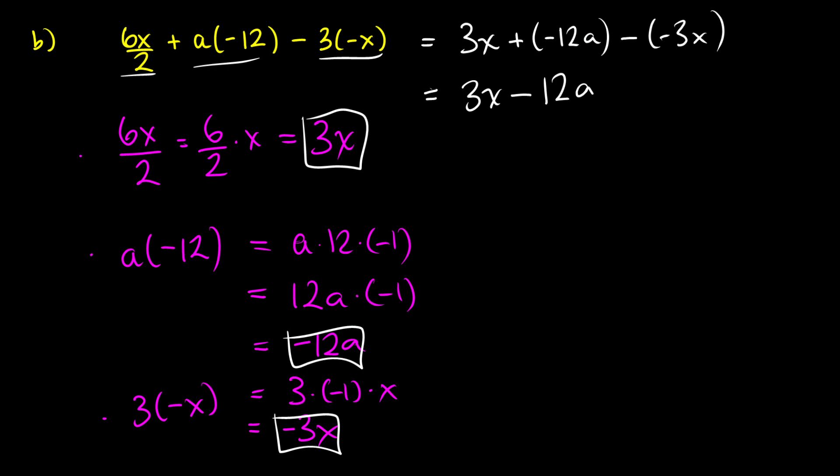Well, what does this mean, minus negative 3x? This is the same thing as negative one times negative one times 3x. So these negatives are going to cancel, and we're just going to be left with 3x. So subtracting negative 3x is just the same thing as adding 3x.